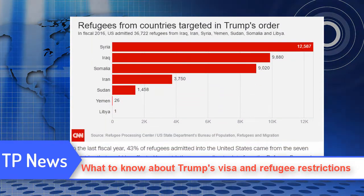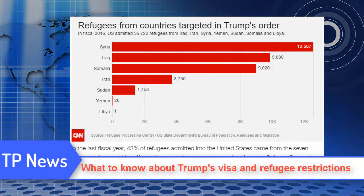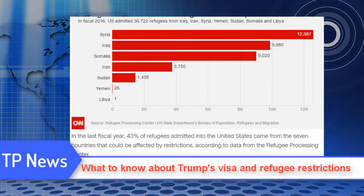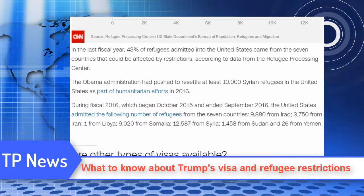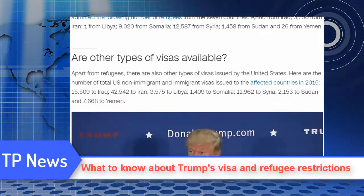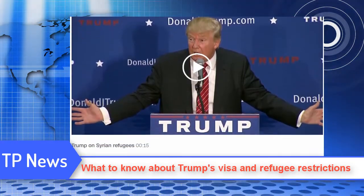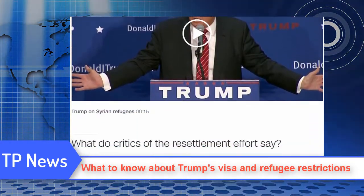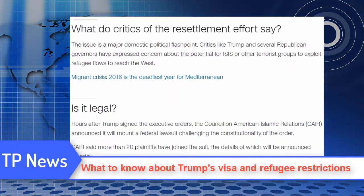The same order also suspends the U.S. refugee admissions program for 120 days, until it is reinstated for nationals of countries that Trump's cabinet believes can be properly vetted. The total number of refugees admitted into the United States will be capped during the 2017 fiscal year at 50,000 — down more than half from the current level of 110,000.